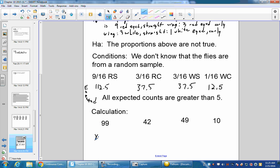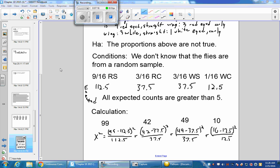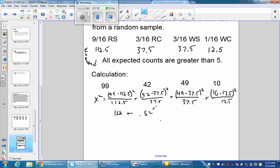Our chi-square value is (99 - 112.5)² / 112.5 + (42 - 37.5)² / 37.5 + (49 - 37.5)² / 37.5 + (10 - 12.5)² / 12.5. Now I'm going to take a second to do this on my calculator.